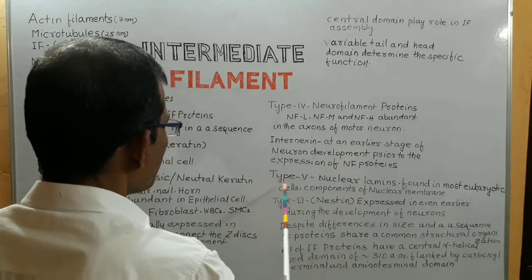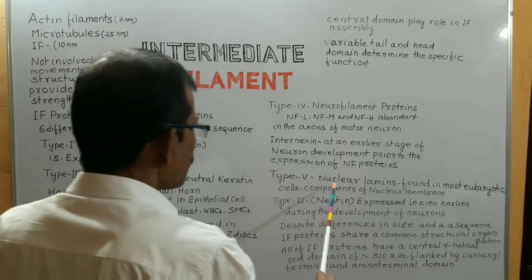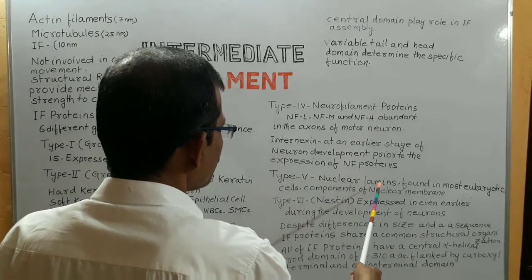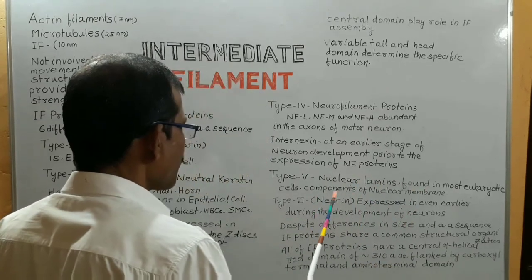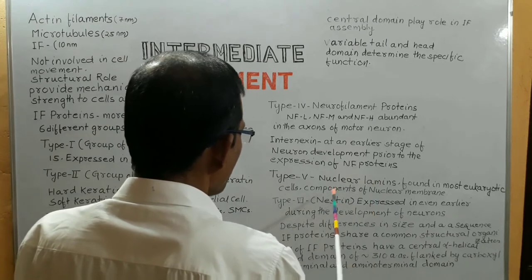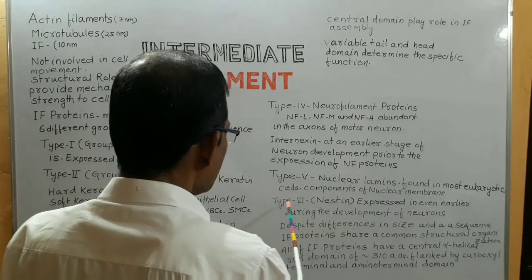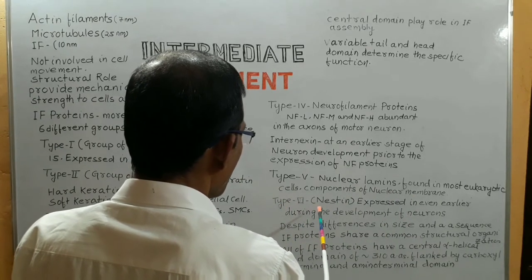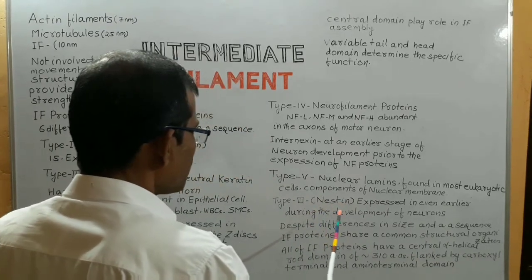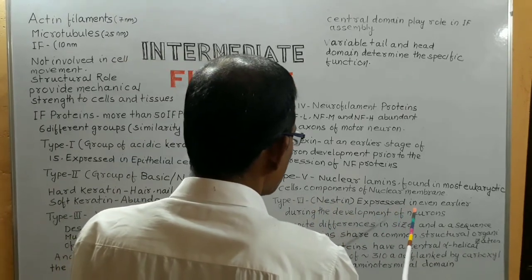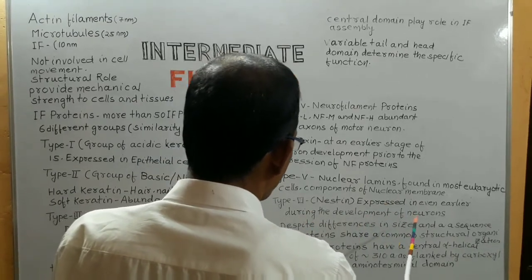Type 5 intermediate filament proteins include nuclear lamins. Nuclear lamins are found in most eukaryotic cells and are components of the nuclear membrane. Type 6 intermediate filament protein is nestin, which is expressed at an even earlier stage during the development of neurons.